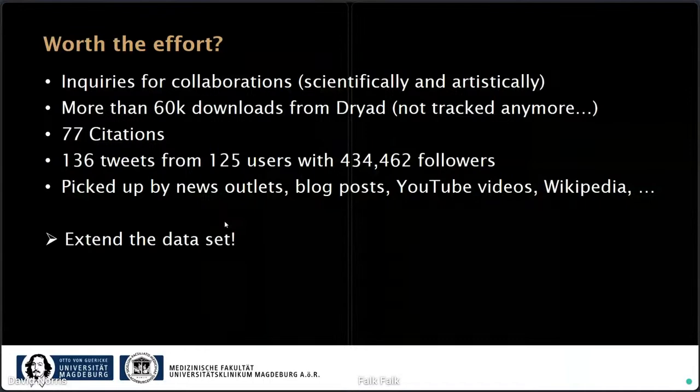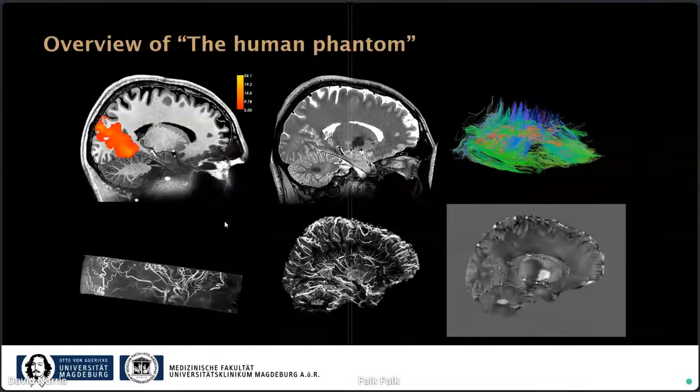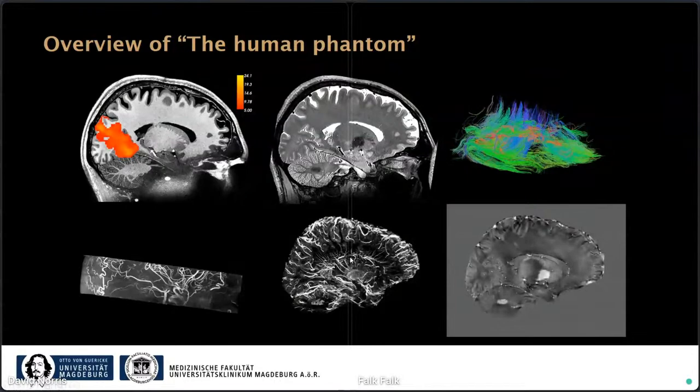That success led us to conclude we should extend the dataset, which is what we did. We were fortunate that the same subject has been involved in very many studies in Magdeburg. What we now call the human phantom includes structural data with T1- and T2-weighted acquisitions, DTI data, a TOF sequence, QSM, a venogram based on that QSM, and also some resting state data.